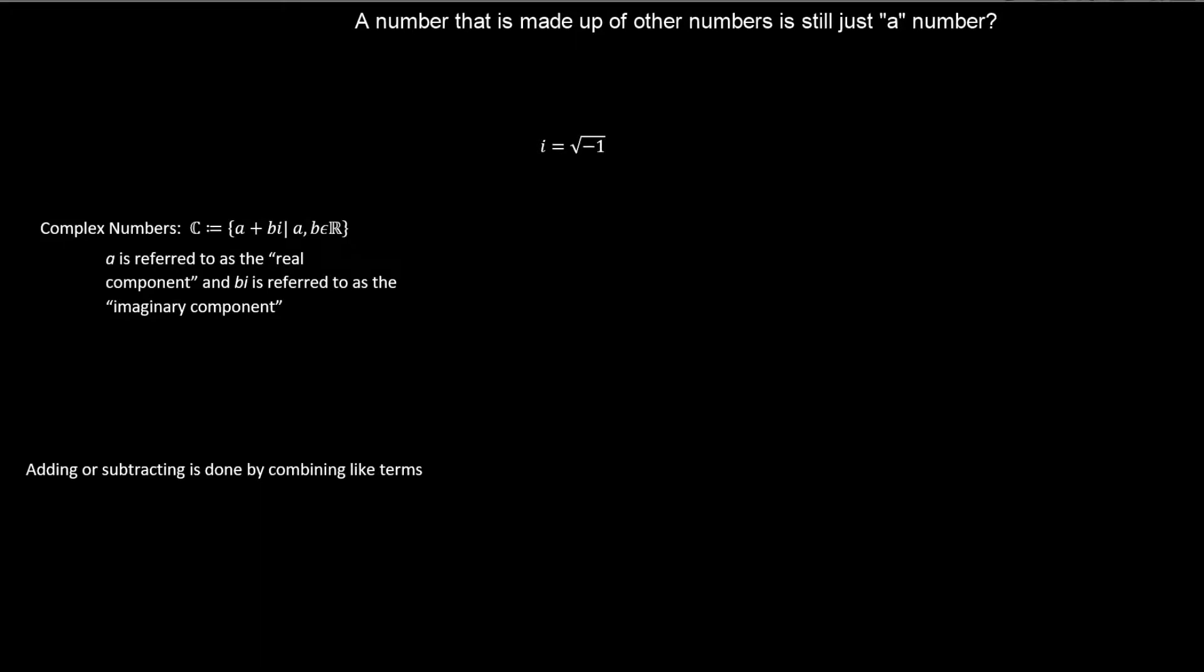In this video, we'll talk about a number that is made up of other numbers that is still just a single number. A little bit of history behind it. The imaginary number was stumbled upon by a guy named Cardano in the mid-1500s. He got it for a solution to a cubic.